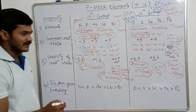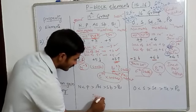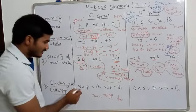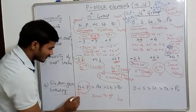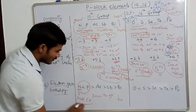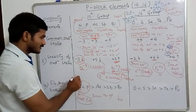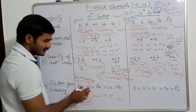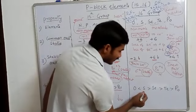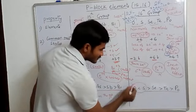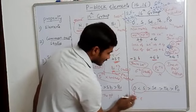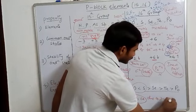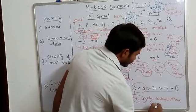Electron gain enthalpy normally decreases down the group. However, nitrogen has an exception — it has a smaller electron gain enthalpy due to its small atomic size. So nitrogen has less electron affinity, and from sulfur to polonium the trend decreases regularly.